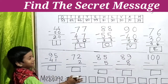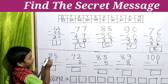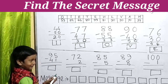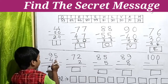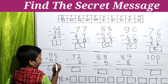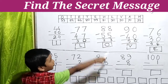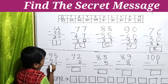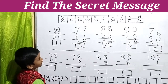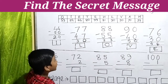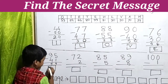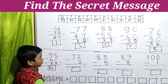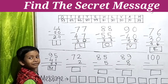Now we do this sum: 95 minus 41 equals what? Let's subtract. First the ones: 5 minus 1 equals 4. Then the tens: 9 minus 4 equals 5. So we got the answer 54, and 54 means M. We write M here. The sixth letter is M.